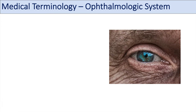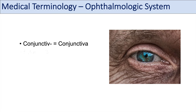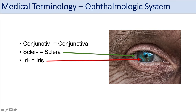Let's talk about the eye in general. The prefix conjunctiv refers to the conjunctiva, which is the layer surrounding the eye — you can think of conjunctivitis, an inflammation of the conjunctiva. The prefix sclera refers to the sclera, the whites of the eyes — you can think of scleritis, an inflammation of the sclera. Another one is ira or iris — the iris is the colored muscle that controls contraction, allowing more or less light through the pupil — and you can think of iritis, an inflammation of the iris.